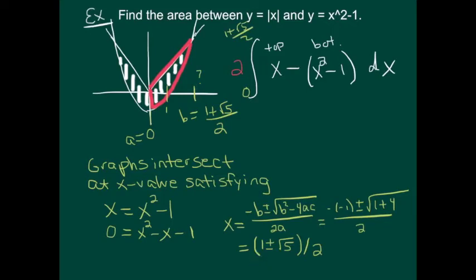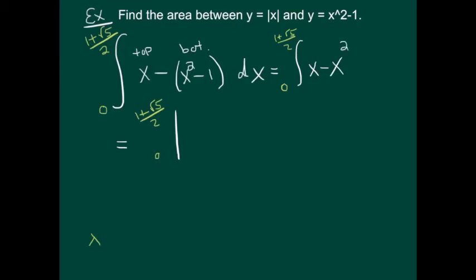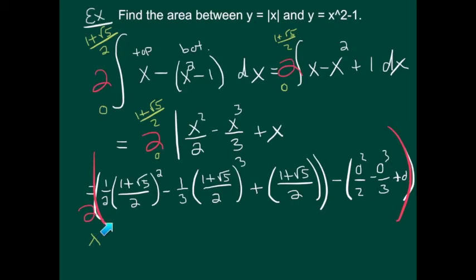The other intersection from the full functions y equals x and y equals x squared minus 1 occurs at x equals 1 minus square root of 5 over 2, but that's irrelevant here. So the limits of integration are 0 to 1 plus square root of 5 over 2. Before computing, I distribute the minus sign to reduce parentheses, then apply the power rule on each piece, plugging in the top and bottom limits. Finally, don't forget to multiply the whole thing by 2. Even though the answer looks messy, it is exactly the area we were asked to find.